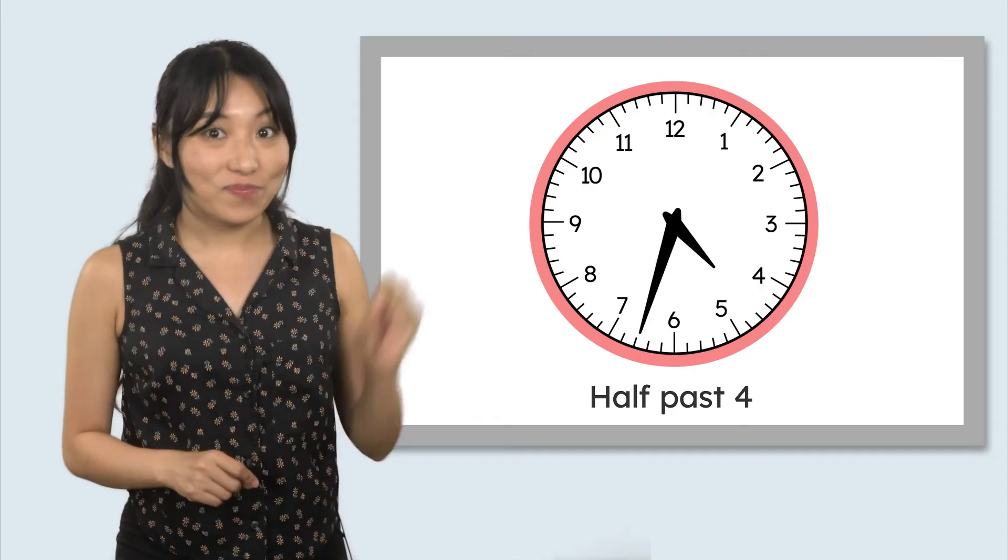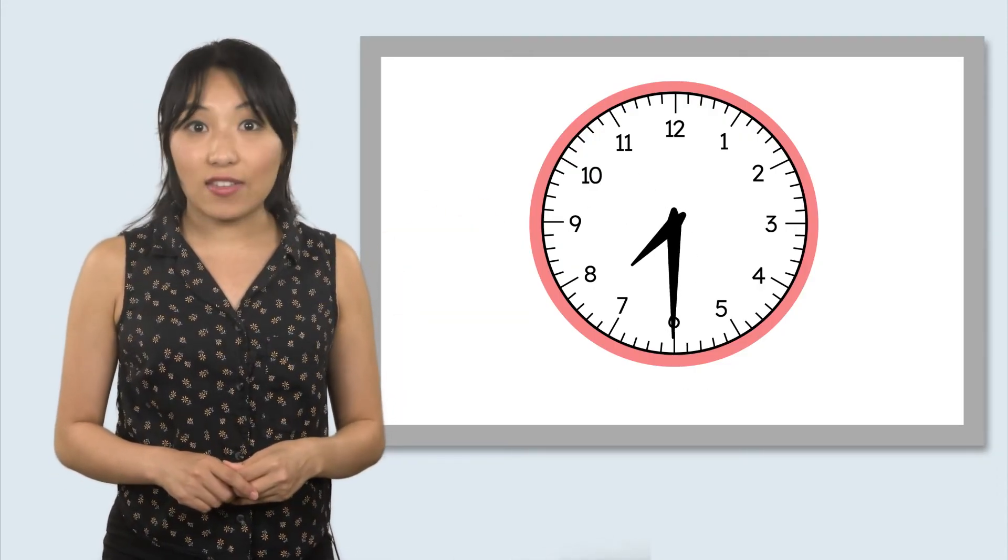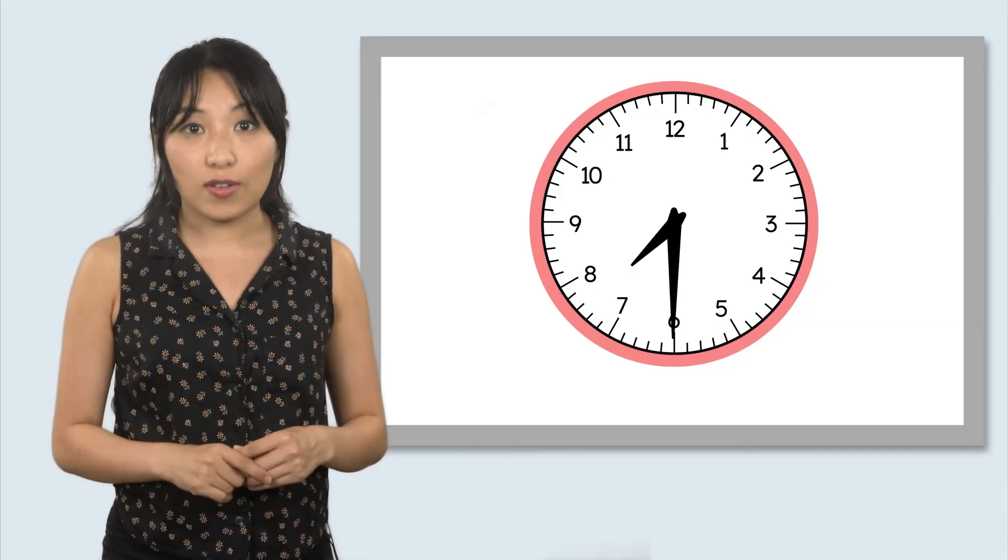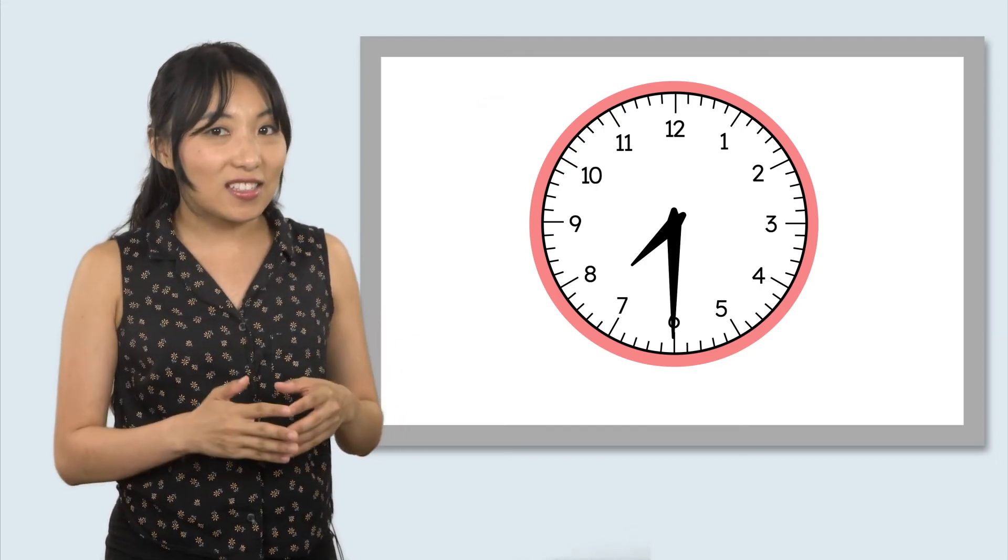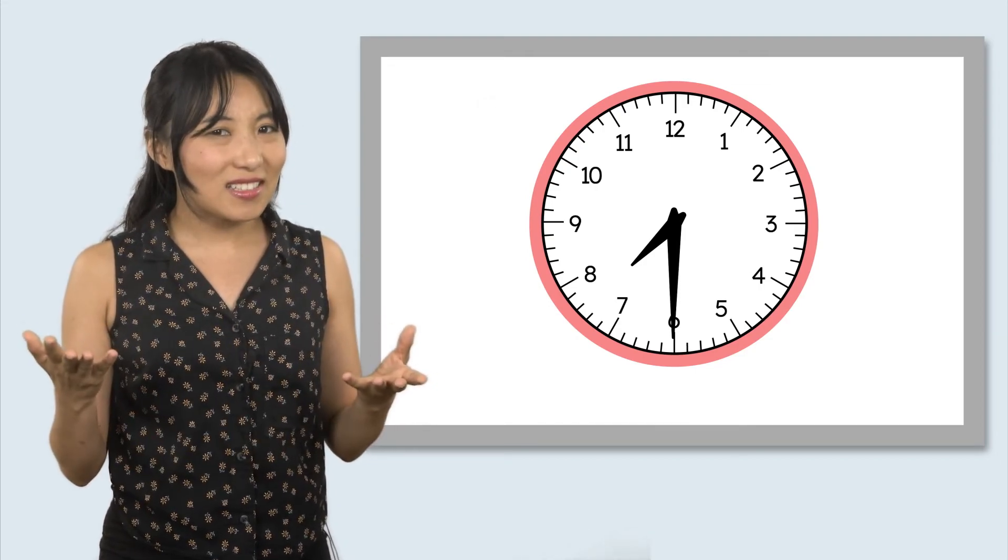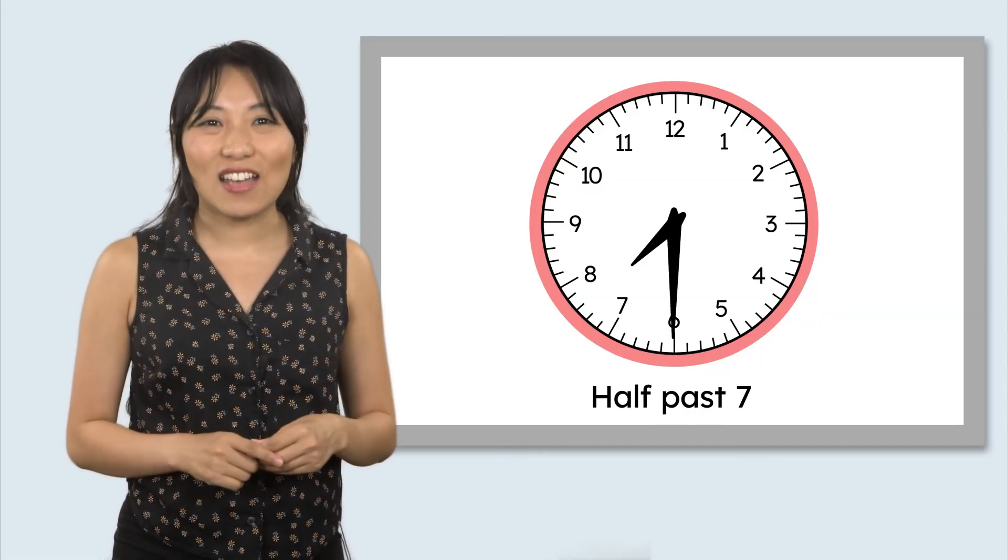Now, it's your turn. Here's a new clock. Look closely at the minute hand and the hour hand. What do you notice? The minute hand is on the 6, which means it's half past the hour. The hour hand is between the 7 and the 8, so it hasn't reached the 8 yet. What time is it? It's half past 7.